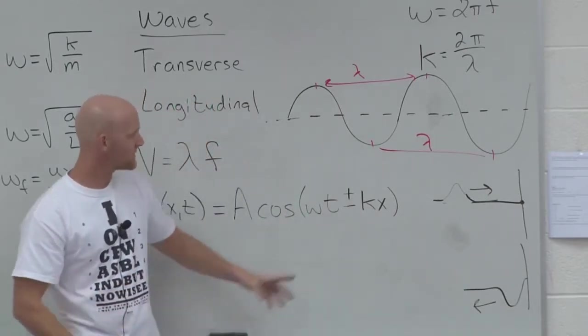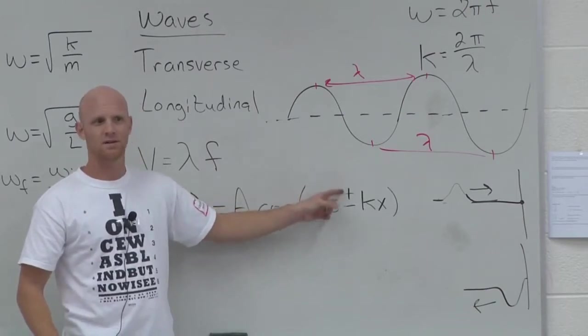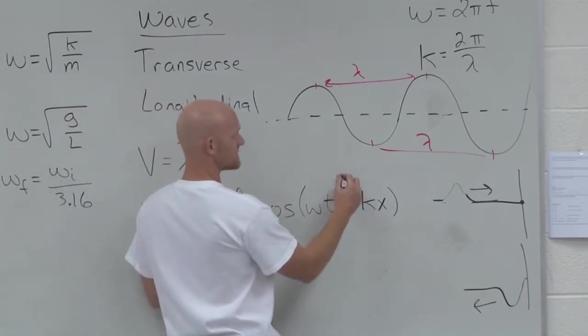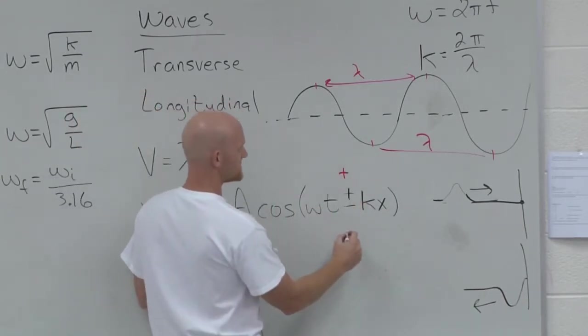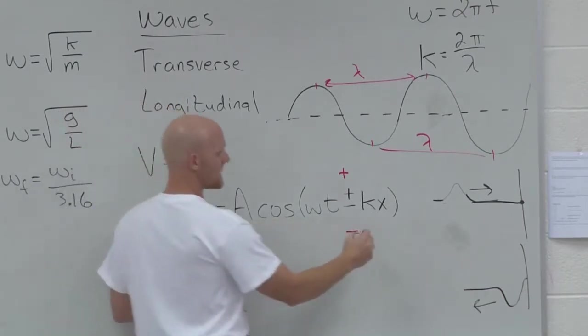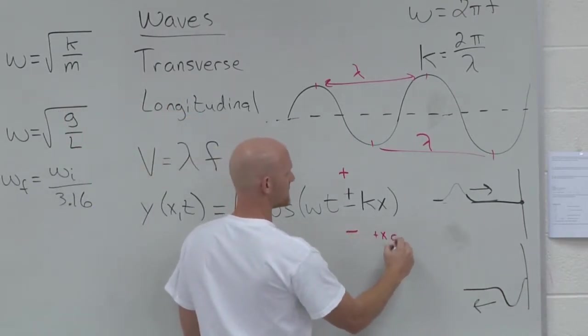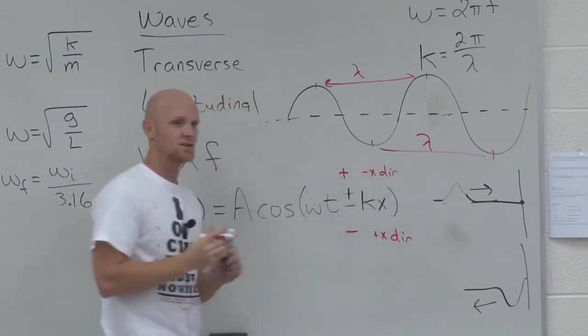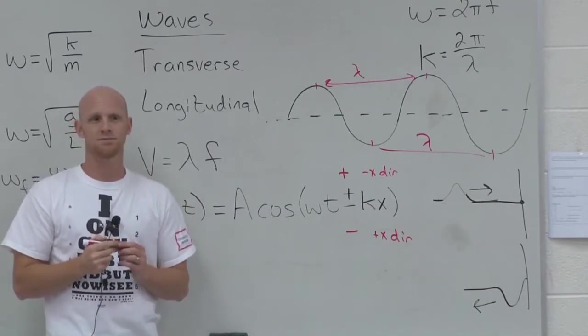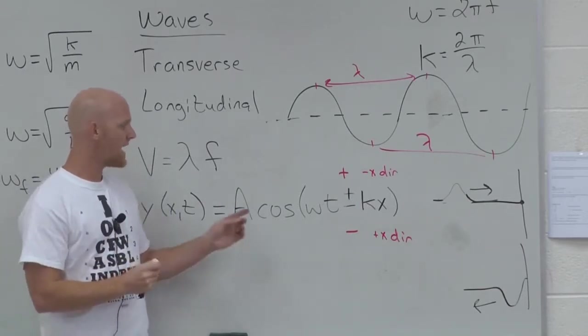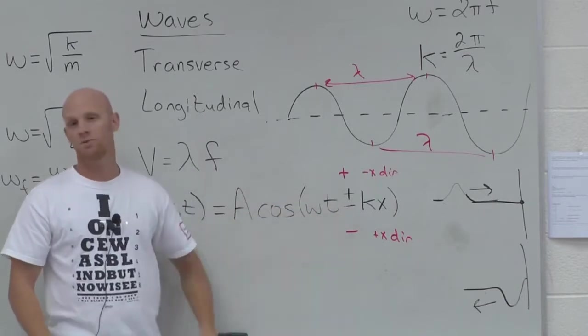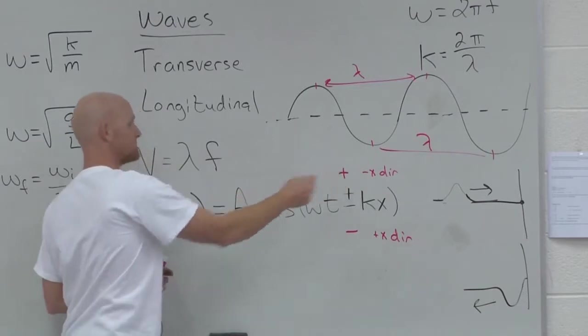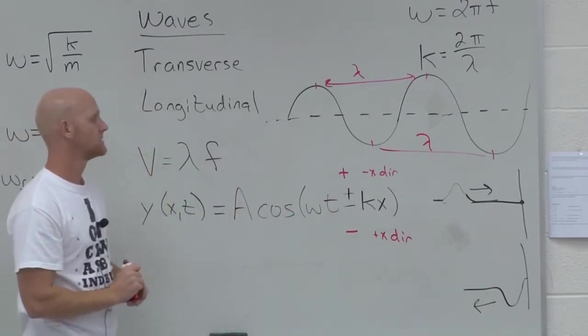The next part is this. Notice how I put a plus or minus here? That tells you what direction the wave is traveling. If it's minus, that means it's traveling in the positive x direction. If it's plus, it means it's traveling in the negative x direction. It kind of seems backwards, but that's the way it works. When I give you an actual equation, you can look right at the sign, and from that one thing alone, you already know which way the wave is moving. To the right, positive x direction, or to the left, negative x direction.